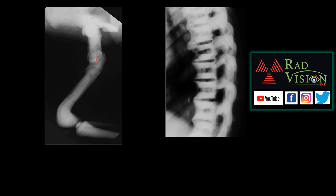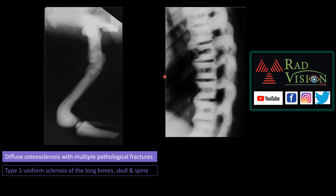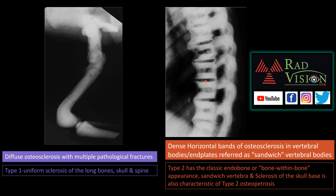This is a classical case of osteopetrosis. In another case, you can see diffuse osteosclerosis with pathological fractures and diffuse osteosclerotic bands at the vertebral end plates, which are typically known as sandwich vertebra.